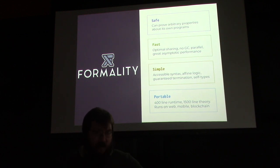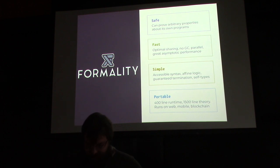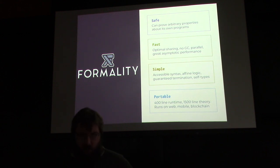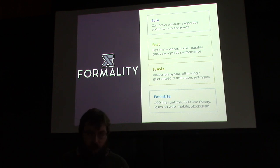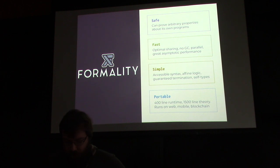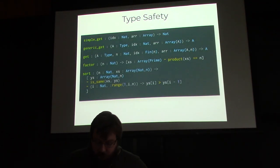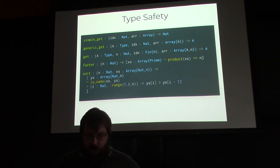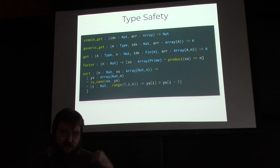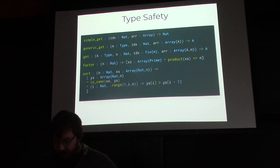We really follow intuitionistic type theory. Our goal with Formality is to build a language that is safe, fast, simple, and portable. Some of those things are really important for practical software, and a lot of proof languages don't particularly prioritize being fast, simple, or portable. If you want programmers to adopt something, it's got to be fast. Here are all the type signatures from the introduction to dependent types but in Formality's syntax — just the types, not the implementations, but basically the same as the pseudocode.